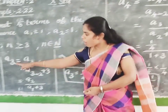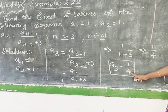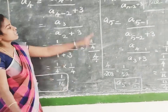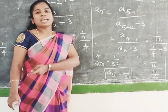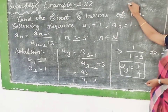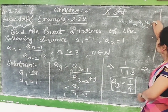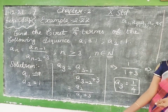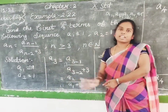So the answers are: A1 answer is 1, A2 answer is 1, A3 answer is 1 by 4, A4 answer is 1 by 16, and A5 answer is 1 by 52. These are the first five terms. We simply substitute 1, 2, 3, 4, 5 into the general formula to get each answer.